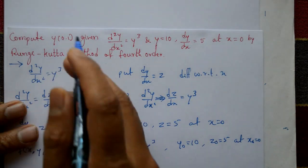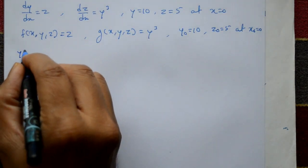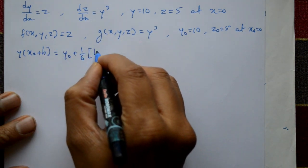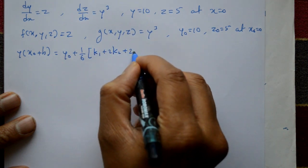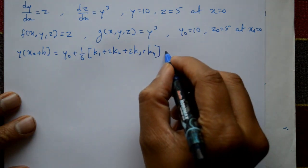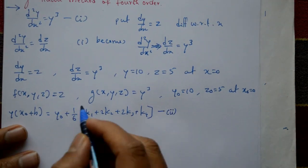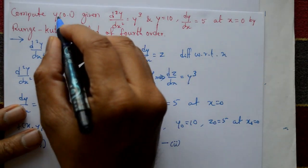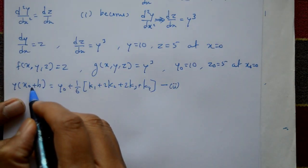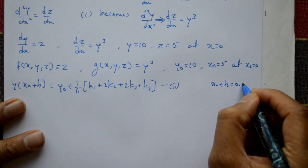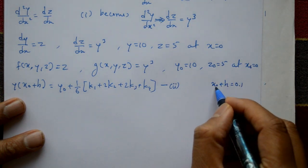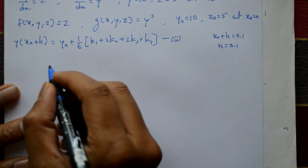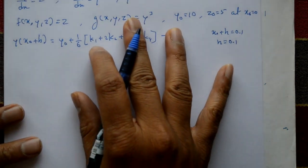We need to calculate y(x₀ + h) using the RK4 formula: y(x₀ + h) = y₀ + (1/6)(k1 + 2k2 + 2k3 + k4). Since x₀ + h = 0.1 and x₀ = 0, we get h = 0.1.